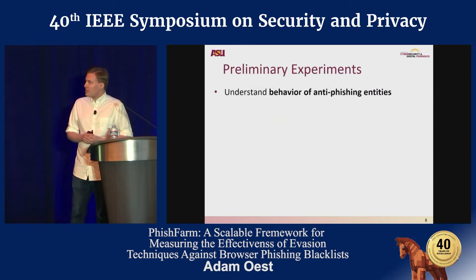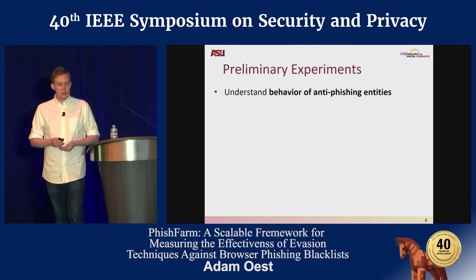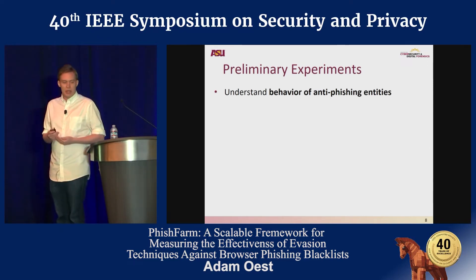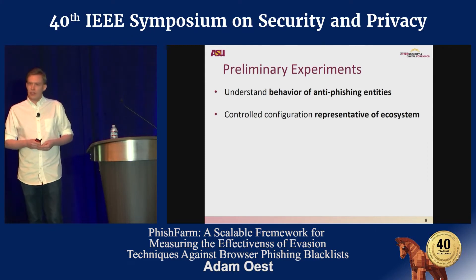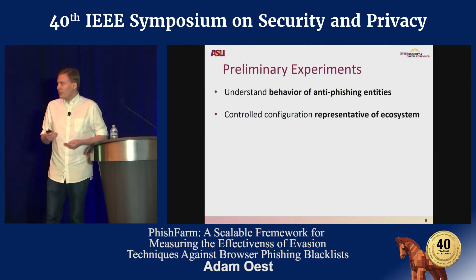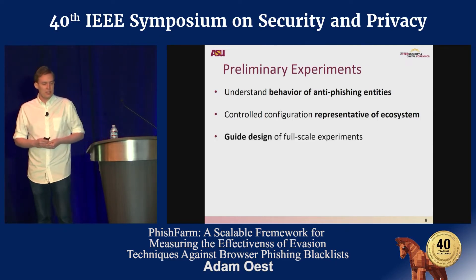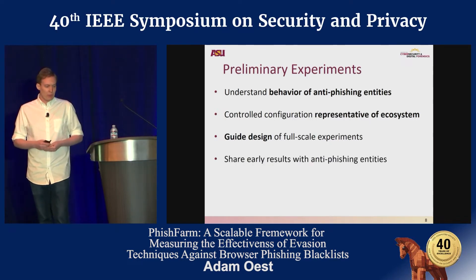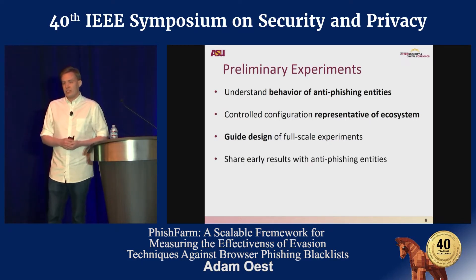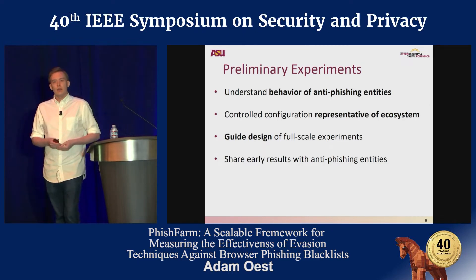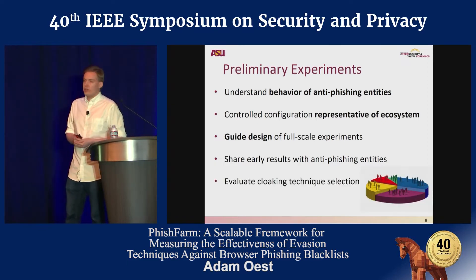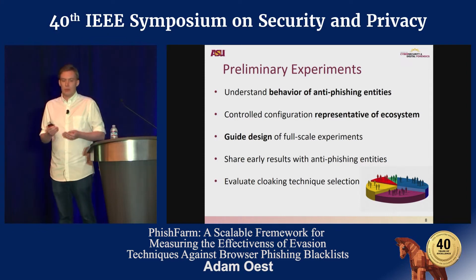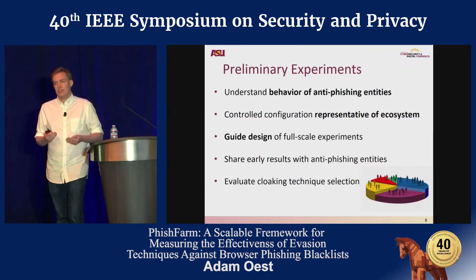To figure this out, we started by deploying some preliminary experiments to really understand how these anti-phishing entities behave. We wanted to deploy a controlled configuration that's representative of the real anti-phishing ecosystem and real phishing websites. We wanted to use information from preliminary experiments to guide the full-scale experiments that follow to give us a statistically significant sample. Whatever security recommendations we found early on could also be shared with the anti-phishing entities.